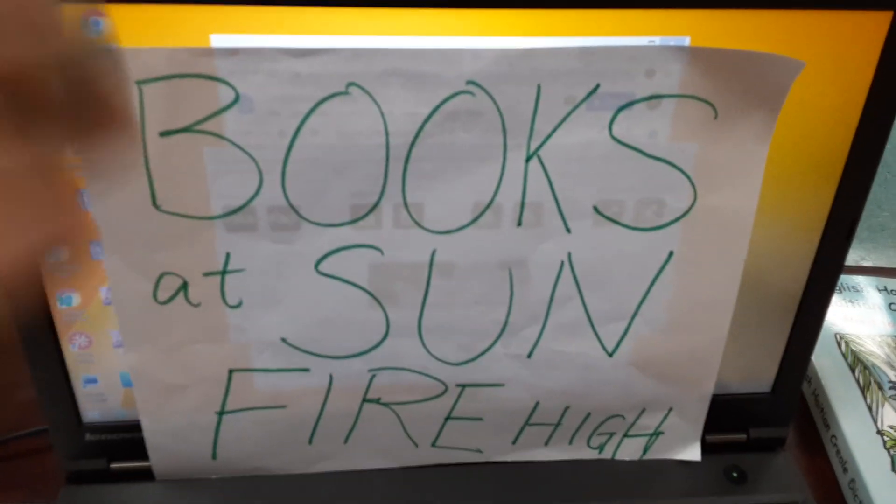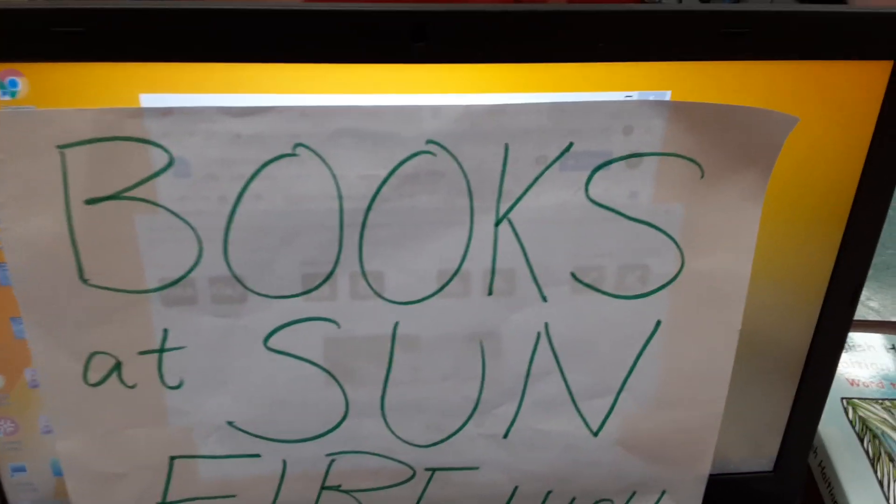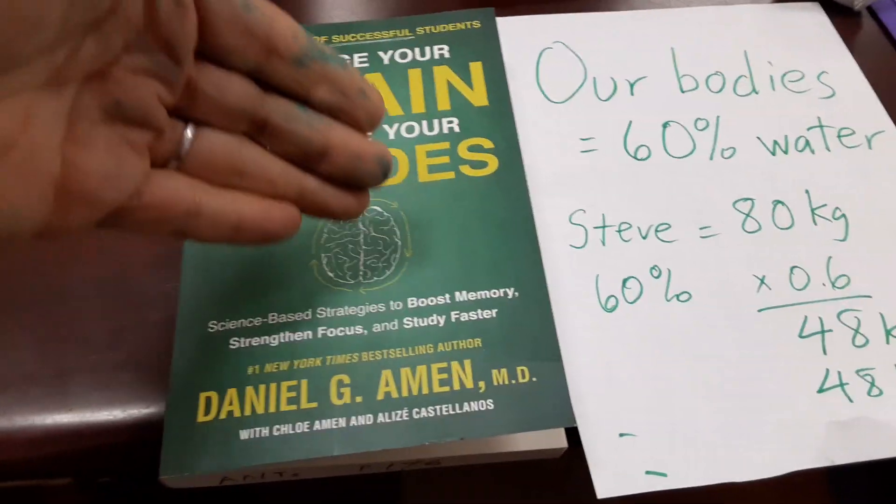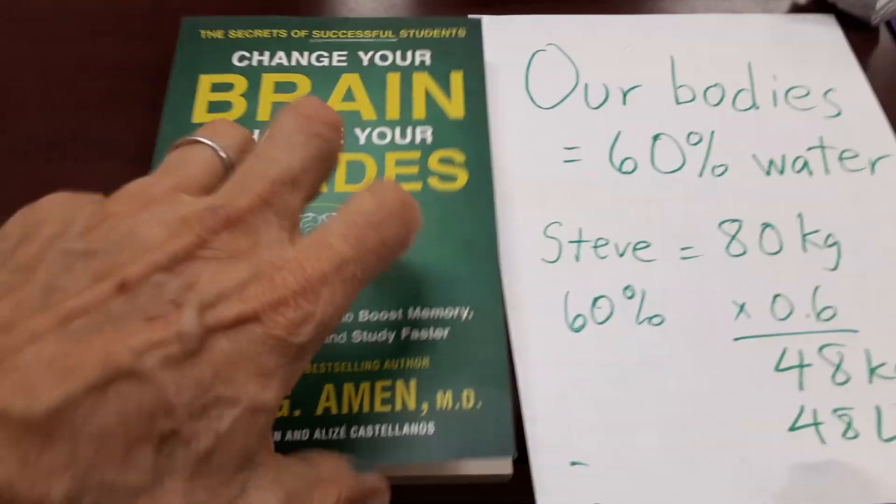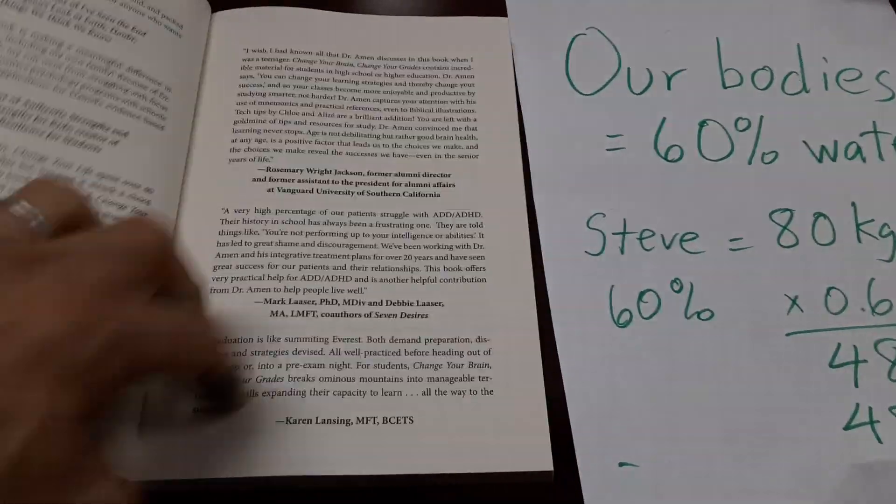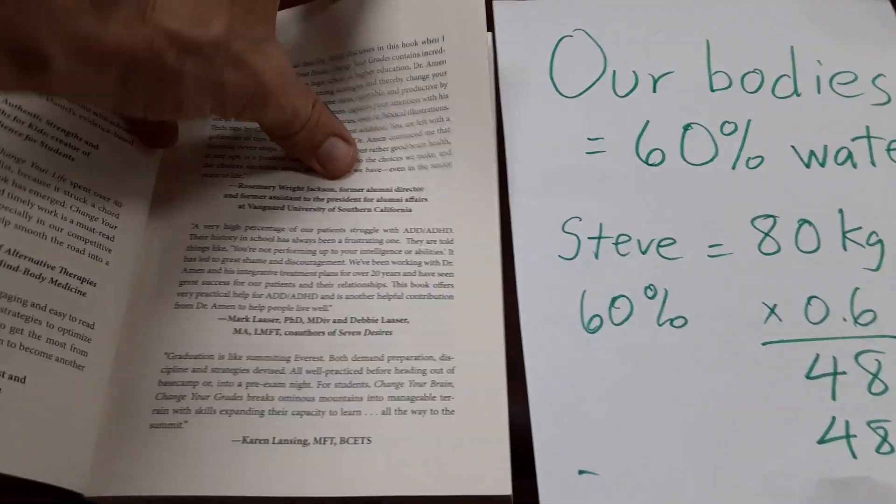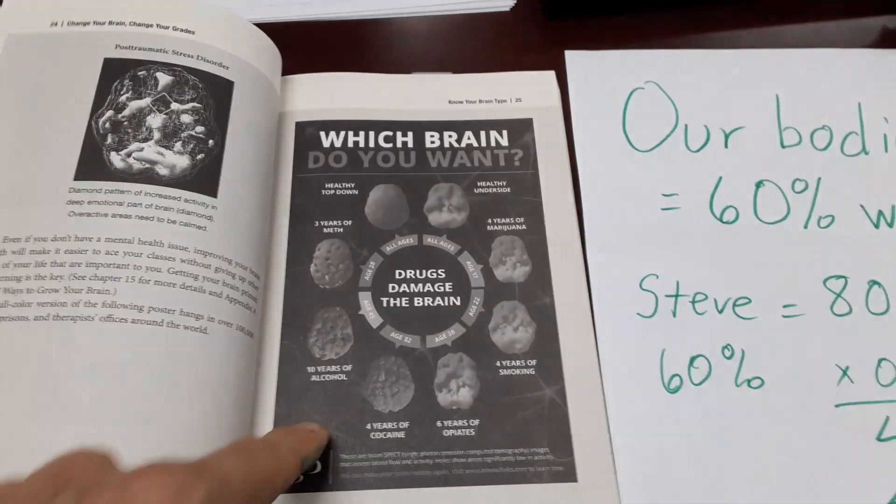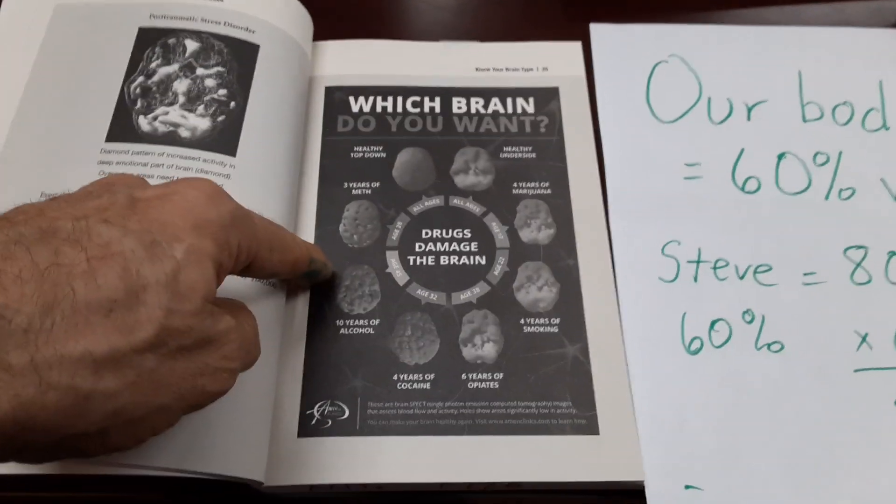This is another Books at Sunfire High. We're going to look at a book and find a gold nugget. I'm going to leave someone else to explain this diagram because you know this one pretty well.